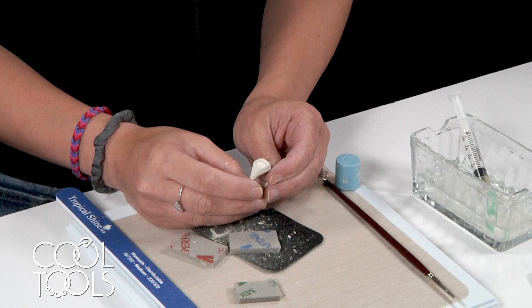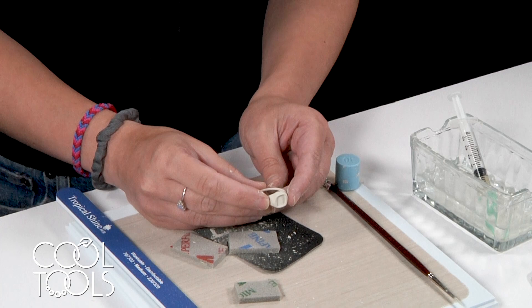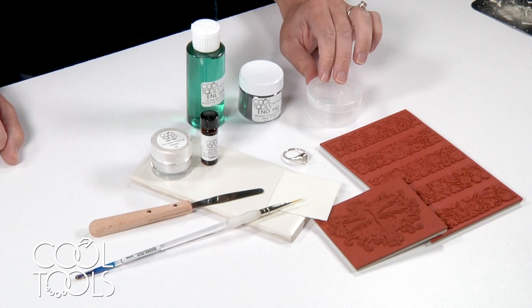Since I'm working with EZ960, I'm going to fire at 1675 for two hours. I fire pieces like this on top of luminohydrate in a silica dish.